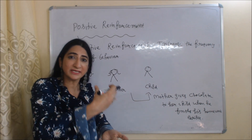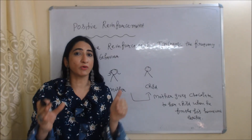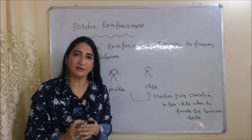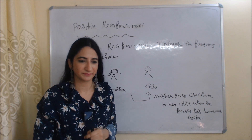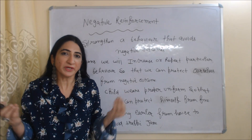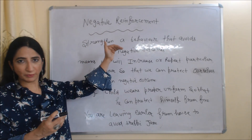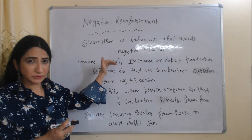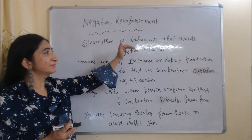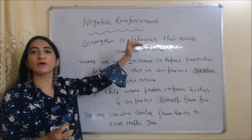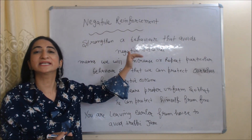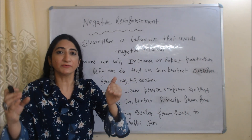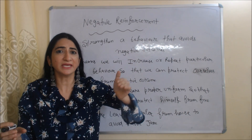So here the child is repeating his behavior because of chocolate, and chocolate is the positive reinforcement. Now we are going to talk about negative reinforcement. Negative reinforcement means strengthening behavior that avoids a negative outcome — we increase or repeat a particular behavior so that we can protect ourselves from a negative outcome.